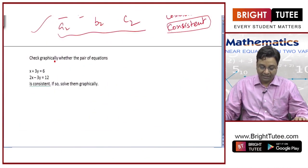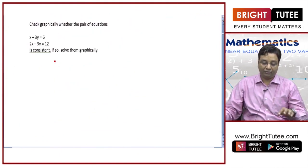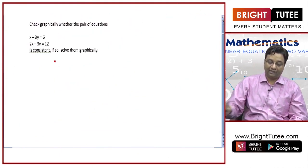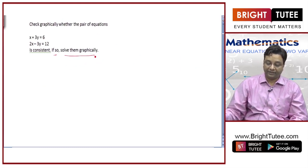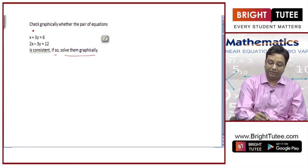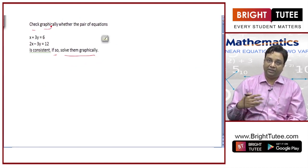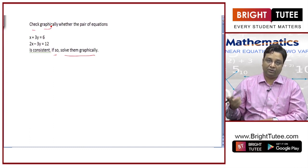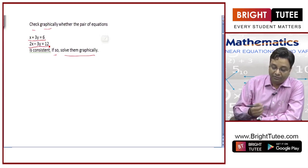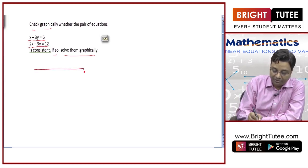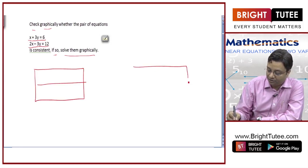Let us check graphically whether the pair of equations is consistent; if so, solve them graphically. If we check it graphically, it will be solved automatically there and then. We have x plus 3y equals 6 and 2x minus 3y equals 12. To check it, we have to make a graph. Let us make two tables, one for the first equation and one for the second.